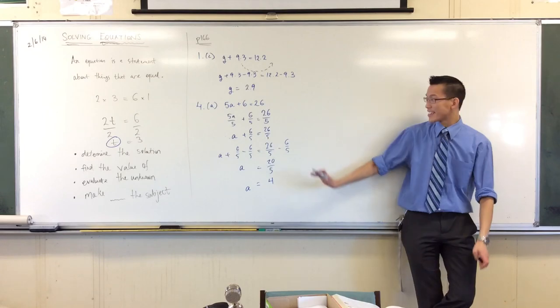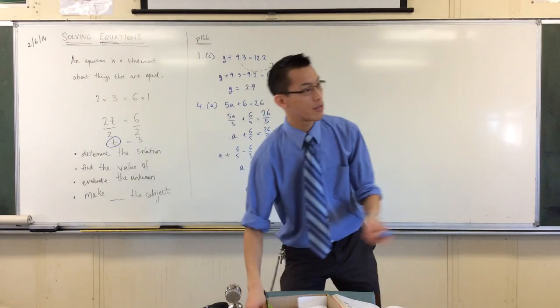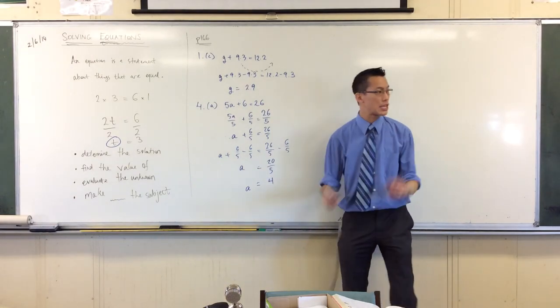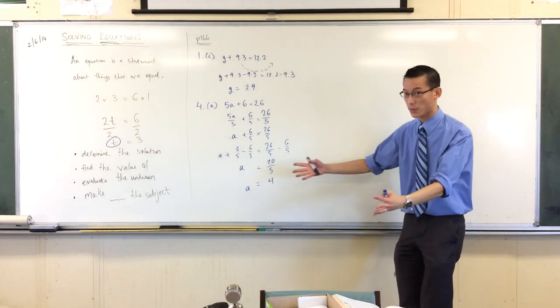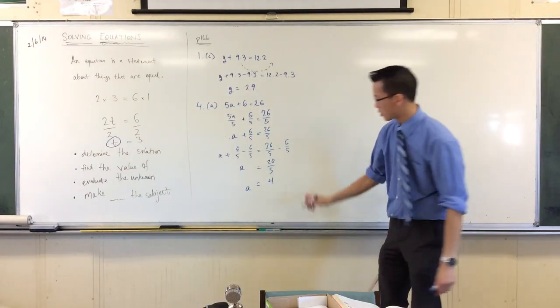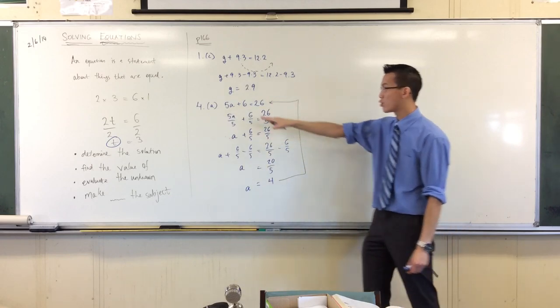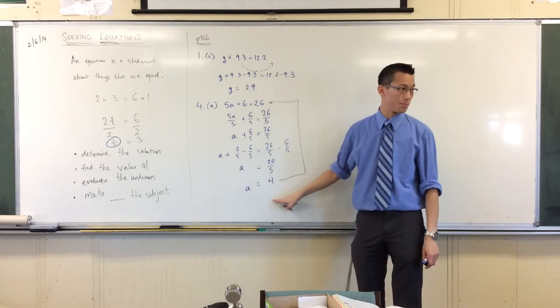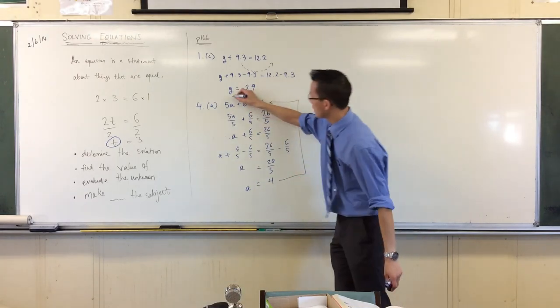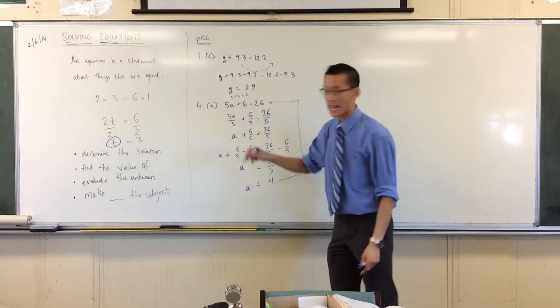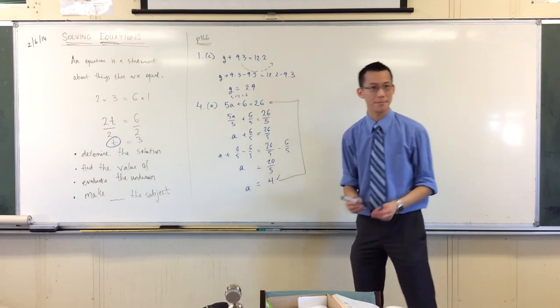Okay, now that's correct. Now by the way, before we move off this, I want to draw your attention to the fact that this here is the solution. So when they say determine the solution of equation, this is it. a equals 4. You can notice the solution because you can take it back to the first line, and like I said, like a key it should unlock it and make it work. Watch. If a is 4, what happens to this left-hand side? What's it going to be equal to? Well, it'll be 5 times 4 plus 6, that's 20 plus 6, sure enough it's 26. So that's how you can know that you're right.